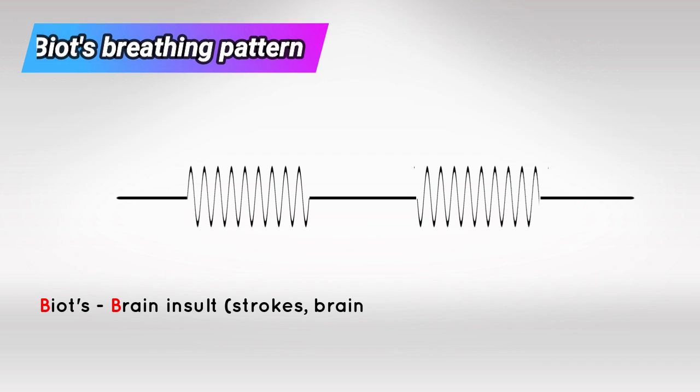Next we have Biot's breathing pattern, which is the result of brain insult. Think of strokes, encephalitis, or many others. It's described as a period of apnea followed by rapid breathing and followed by another period of apnea.